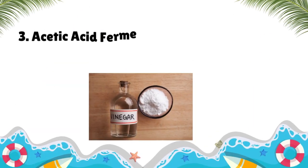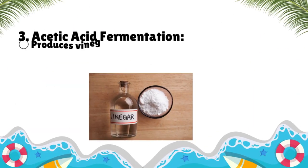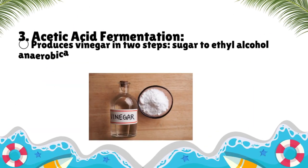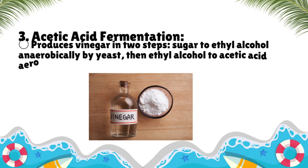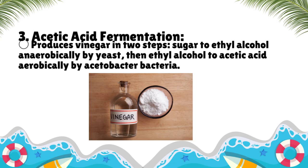Acetic acid fermentation produces vinegar in two steps: sugar is converted to ethyl alcohol anaerobically by yeast, then ethyl alcohol is converted to acetic acid aerobically by Acetobacter bacteria.